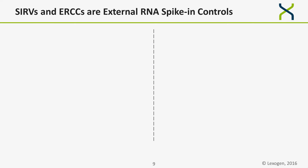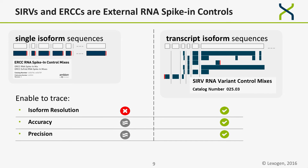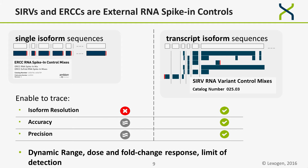Until last year, there was only one type of controls available — ERCCs, single isoform sequences — which made it difficult, because isoform resolution is what transcriptome analysis is all about. The isoform resolution was not given, which influences measures for accuracy and precision. This is what we solved with the SERVs. Not only do you get measures for accuracy and precision, but all subsequent data analysis is now on a different level when using transcript isoform sequences as controls.